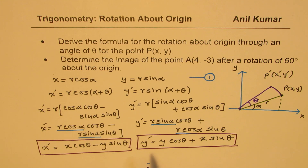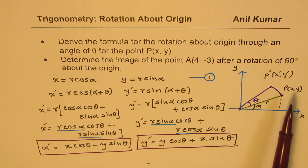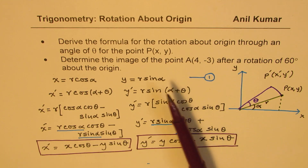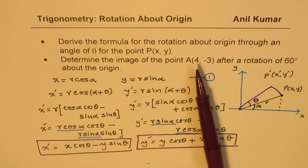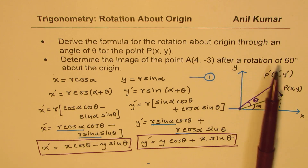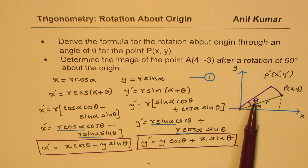We can use this transformation any time with any given situation, since x and y are general points taken in this coordinate system. Now let's try to find the image of point A when it is rotated through an angle of 60 degrees, meaning theta = 60 degrees.